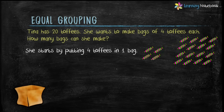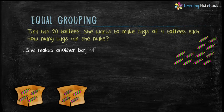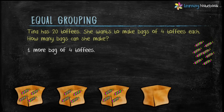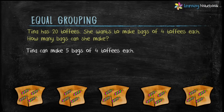She starts by putting 4 toffees in one bag, then makes another bag of 4 toffees, one more bag of 4 toffees, again one more bag of 4 toffees, and finally she adds the last 4 toffees in the 5th bag. So Tina can make 5 bags of 4 toffees each. This means 20 divided by 4 equals 5.